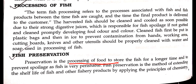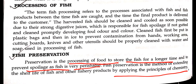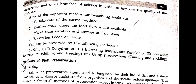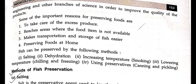Fish preservation is the processing of food to store the fish for a longer time. It is the method of extending the shelf life of fish and other fishery products by applying the principles of chemistry. It is used to take care of excess produce in areas where food items are not available, and it makes transportation and storage of fish easier, including preserving foods at home.